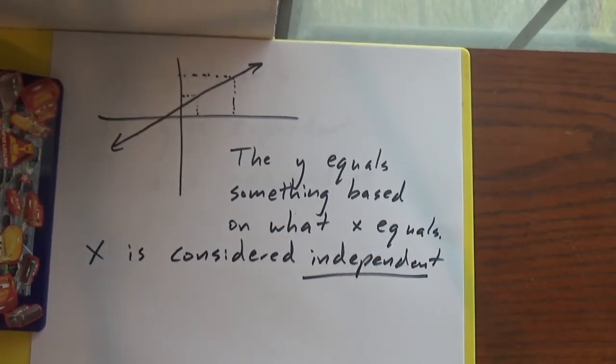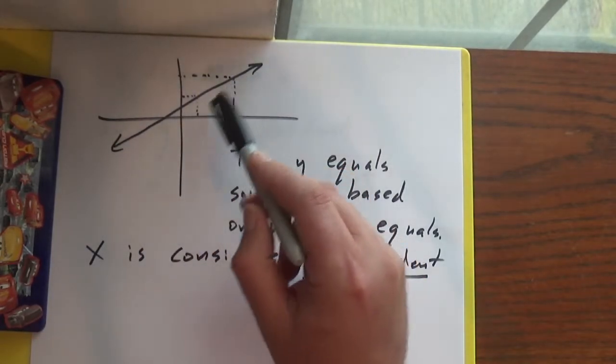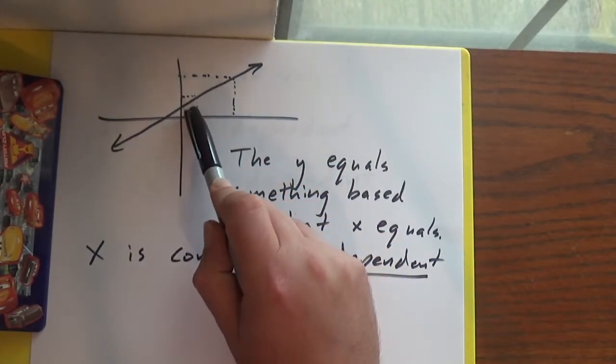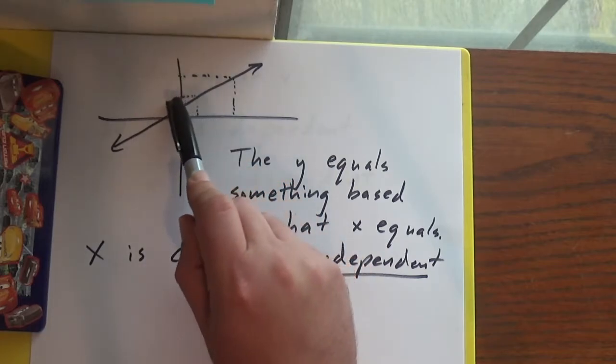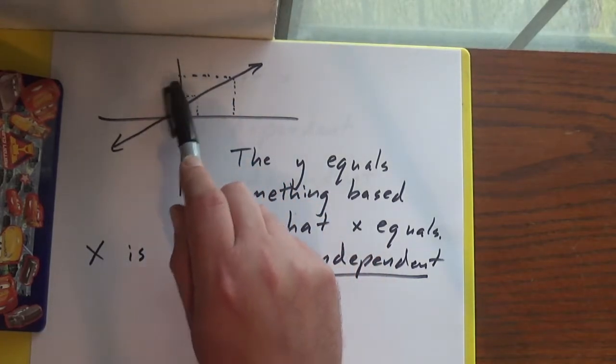Now the reason it's like that, y equals something based on what x equals. So if we've got a line and x is here then that means y is here. But if x is here then y equals something different, right?